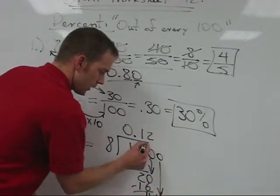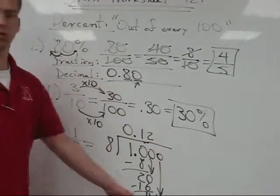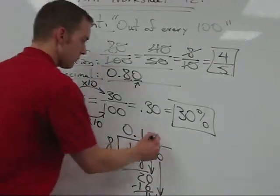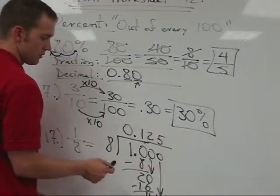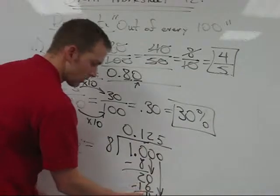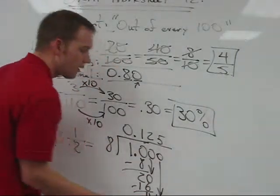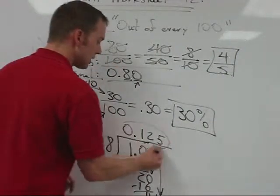So going on, this is the cool thing. Eight goes into 40 awesomely. It goes in five times. We put a five. You could say eight times five is 40. 40 minus 40 is zero. But come on, we know this is going to happen. Now I look at this, and I say, what percent is this?